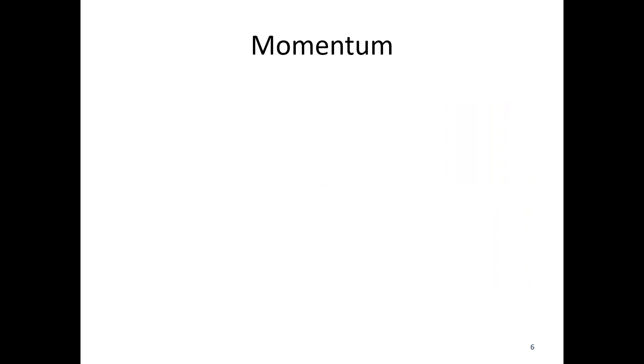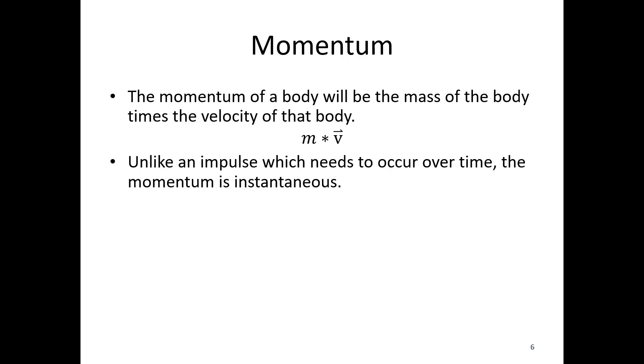All right, moving on to momentum. So, the momentum of a body will be equal to the mass of the body times the velocity of that body. In equation form, m times v, mass is a scalar quantity, does not have a direction, but velocity does have direction.